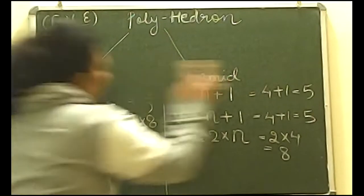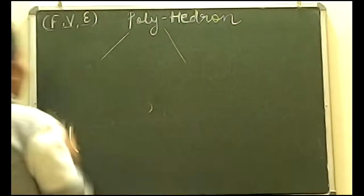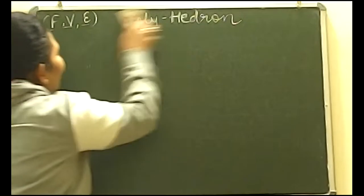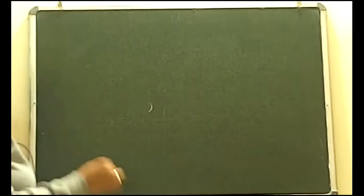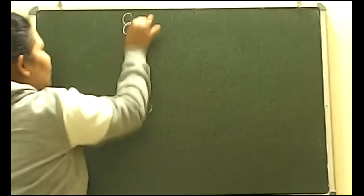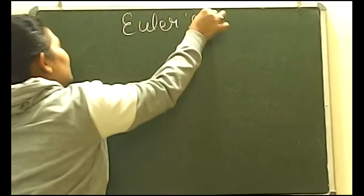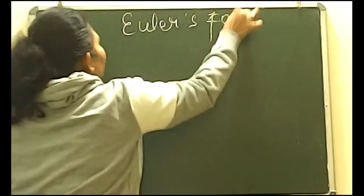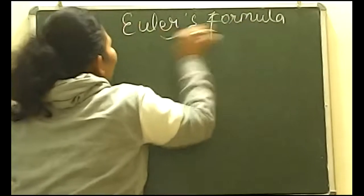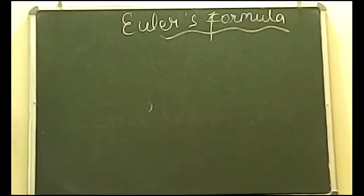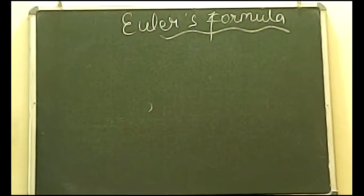One mathematician named Euler — E-U-L-E-R — studied all 3D figures and gave a formula. In class 9th, there is a whole chapter on Euler's theorem. Euler observed all 3D figures and derived one universal formula that applies to every solid shape.